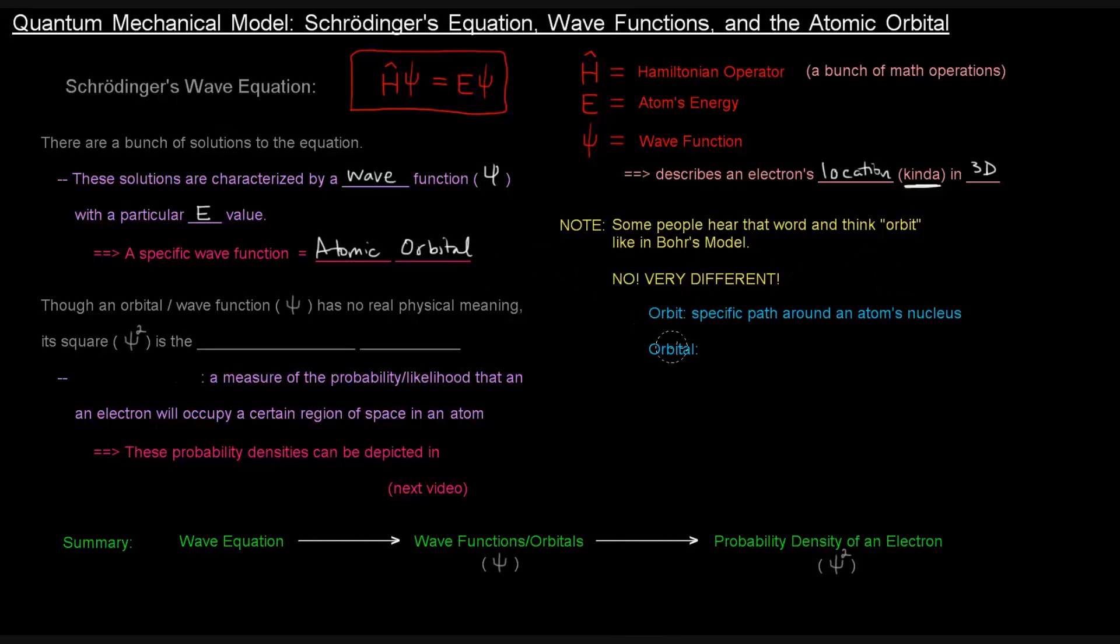So, an atomic orbital, instead, is something very different. And it doesn't actually have a physical meaning, which is kind of weird. So, that kind of brings me to this next point. Even though an orbital or wave function, psi, has no real physical meaning, its square, psi squared, is the probability density.